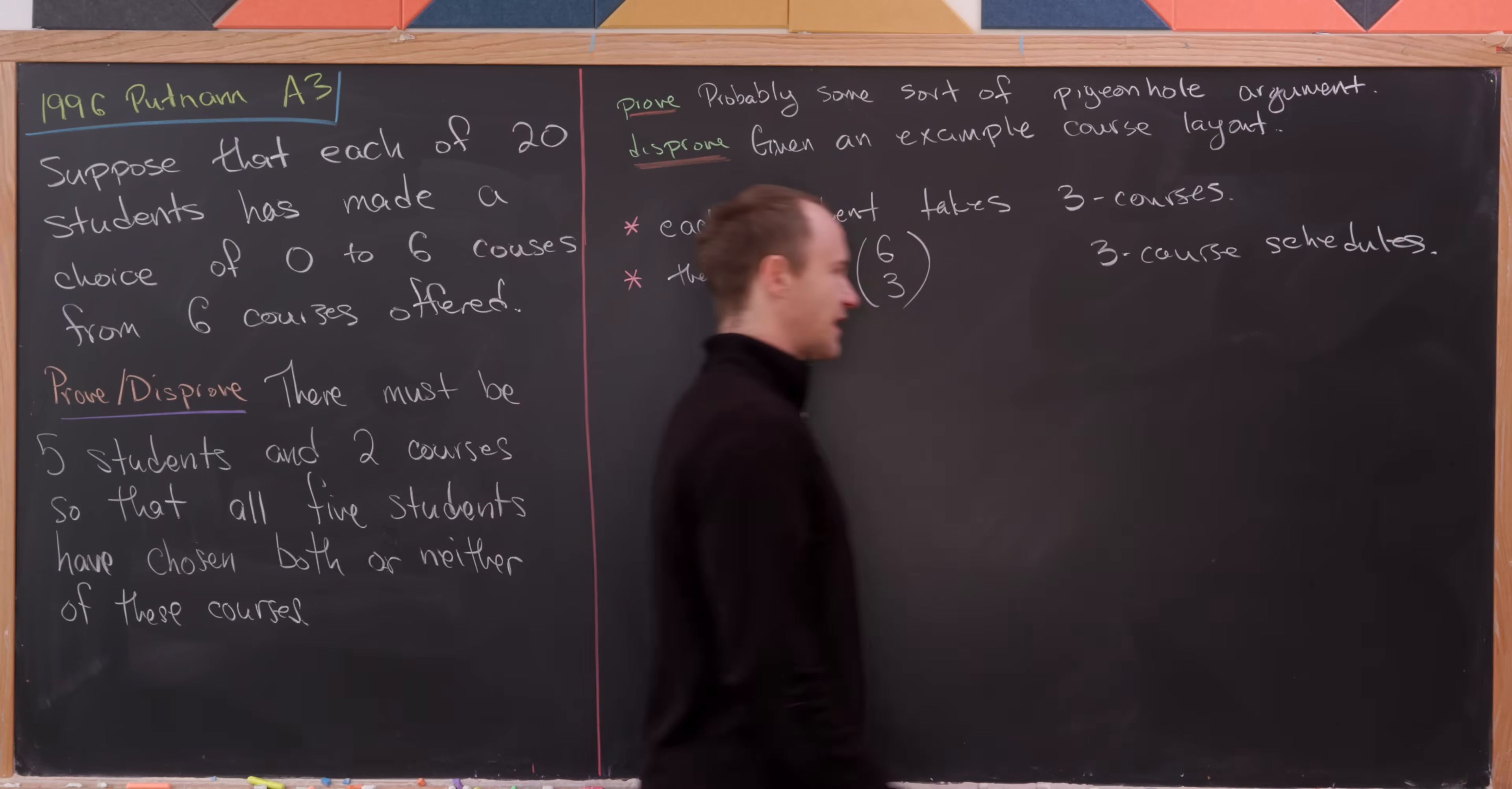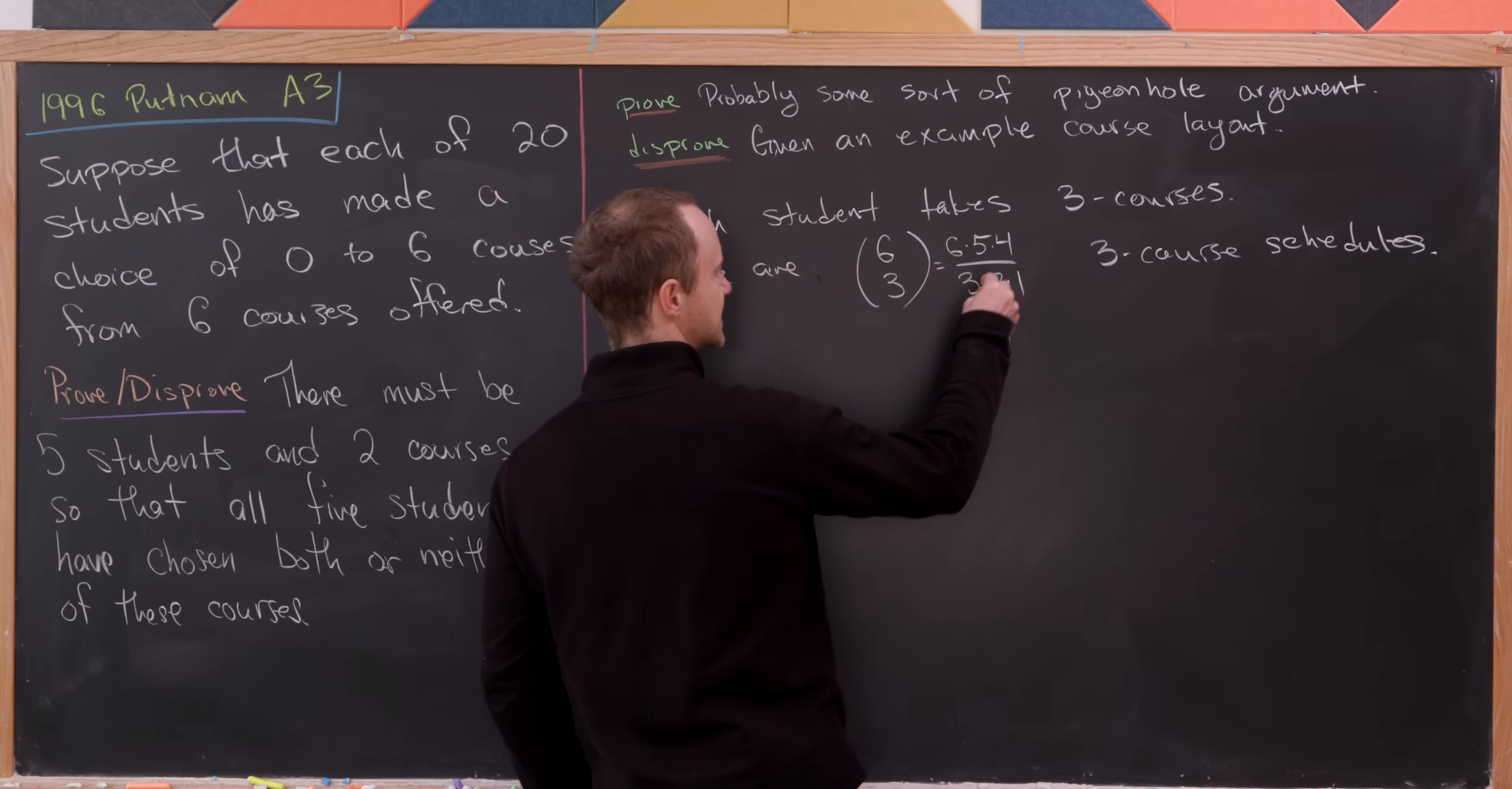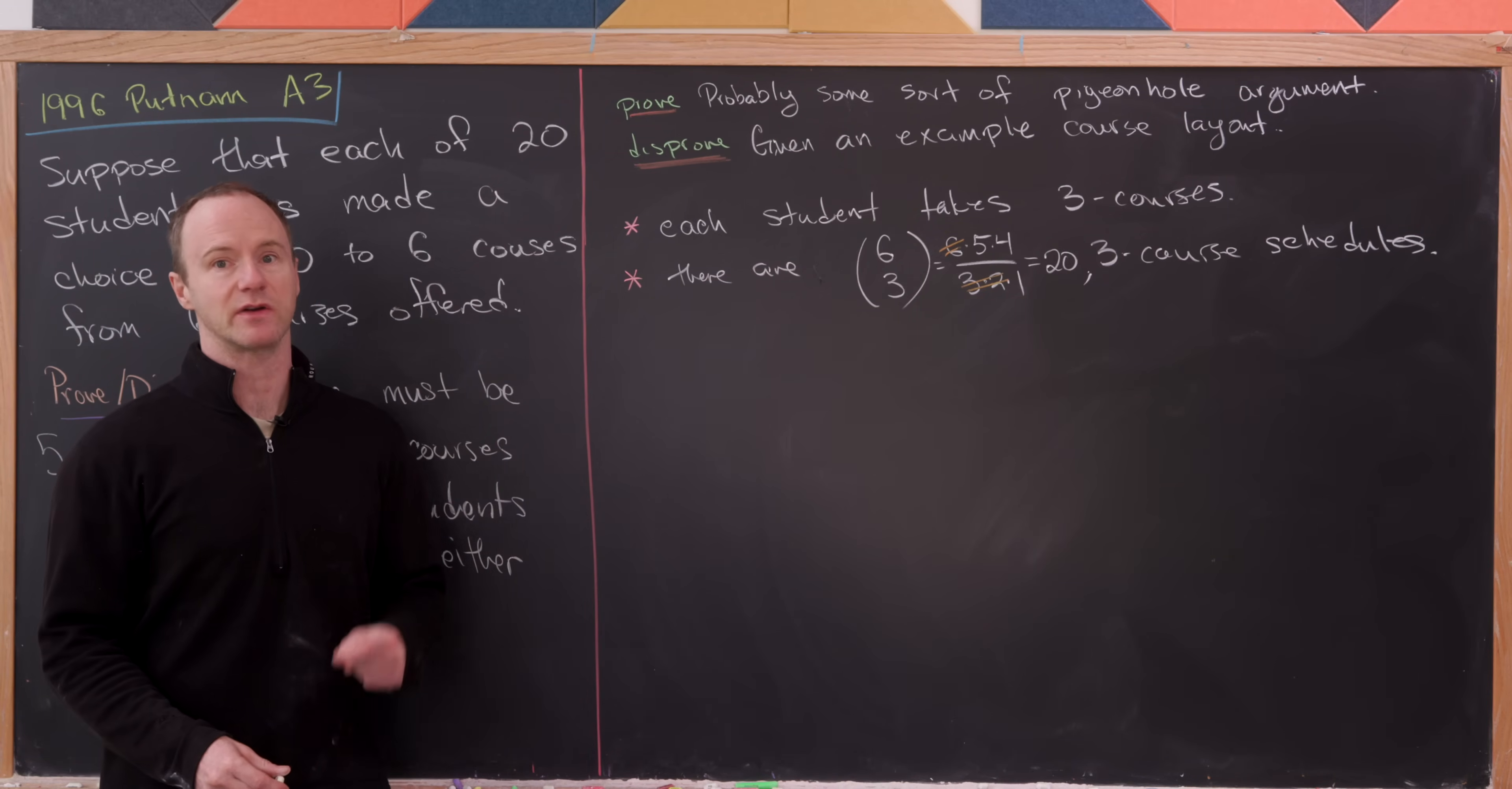But let's calculate what this 6-choose-3 is. So let's recall that it's going to be a descending product of three terms on the numerator, starting with six. So six times five times four, over three factorial. So three times two times one. But let's simplify in the middle here and observe that this three times two is equal to six. So we can get rid of that, leaving us with five times four. So there's our numerical coincidence.